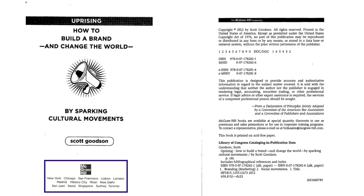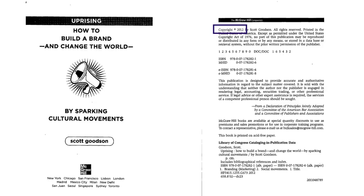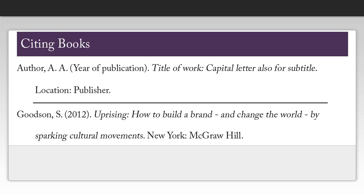We then see a lot of different publishing cities. Generally, if you see more than one, you're just going to take the first one. The only element we're not finding on this page is the date of publication, so what we can do is go to the copyright page and see that it was published in 2012. Now that we've found all the information we need, we can create our citation.